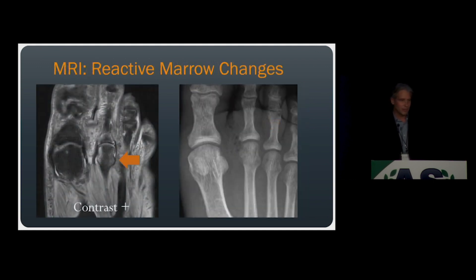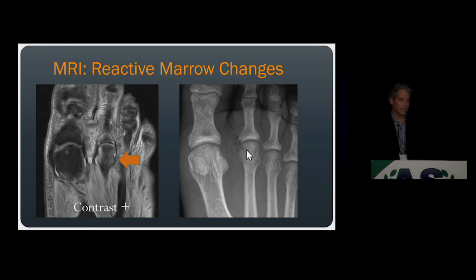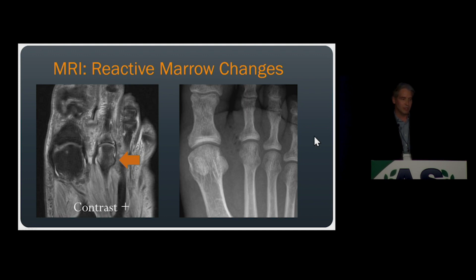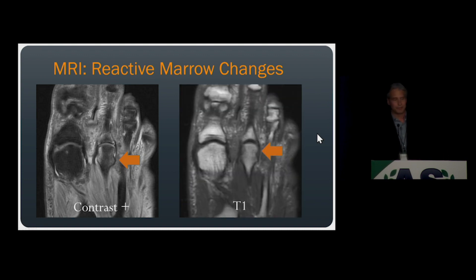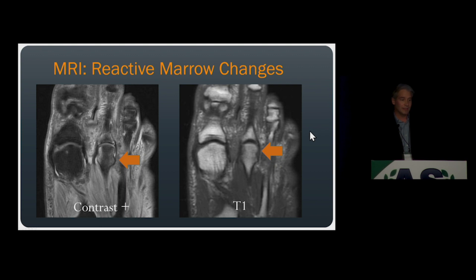Let's compare this with another patient presenting with concern for osteomyelitis. They have an ulcer in their forefoot and soft tissue gas adjacent to the second metatarsal head, but no findings of osteomyelitis on radiograph. On MRI, there is prominent enhancement within the second metatarsal head. Is this osteomyelitis? You should look at your T1 sequence. On the pre-contrast, non-fat-suppressed T1, while there is a little diminished signal in the second metatarsal head, we're not seeing complete or confluent replacement of the T1 fat signal. This is what we call reactive marrow changes.